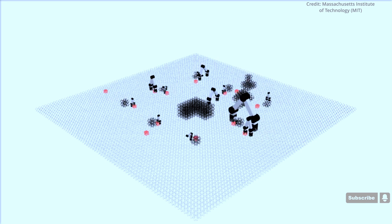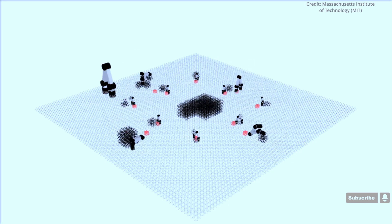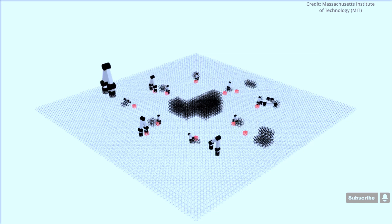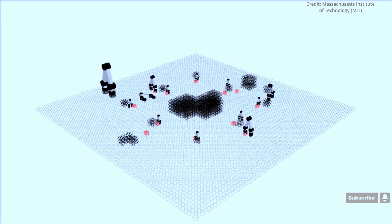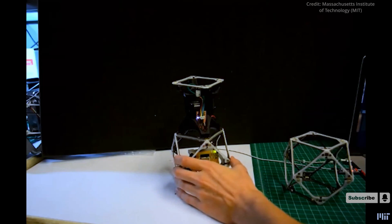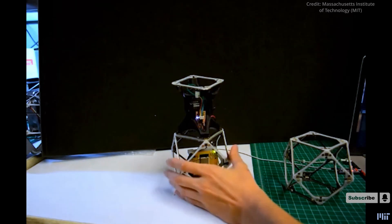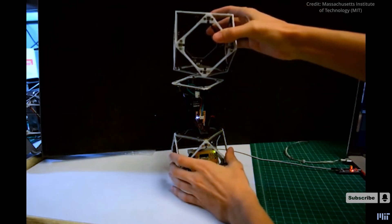However, the new research makes significant progress in that direction by figuring out difficult problems like when to produce more robots, how big to make them, and how to organize robot swarms of various sizes to construct a structure effectively without colliding with one another.